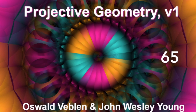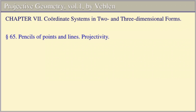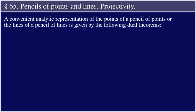Projective Geometry, Volume One, by Oswald Veblen and John Wesley Young. Chapter Seven: Coordinate Systems in Two and Three Dimensional Forms. Section Sixty-Five: Pencils of Points and Lines — Projectivity. A convenient analytic representation of the points of a pencil of points or the lines of a pencil of lines is given by the following dual theorems.